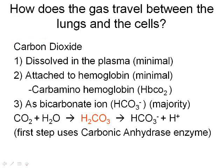For carbon dioxide there are three ways it can be transported. The first is dissolved directly in the plasma — just a small amount of CO2 in the body is transported this way. The second is by attaching to hemoglobin, and this is called carbaminohemoglobin. This is where CO2 binds to hemoglobin just as oxygen would, and again some CO2 is transported this way.